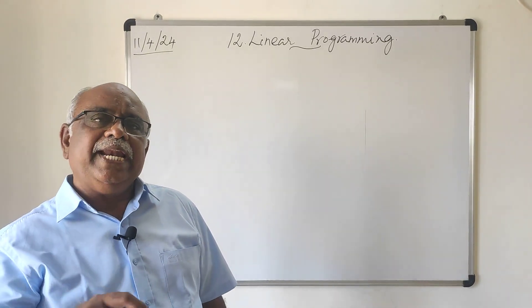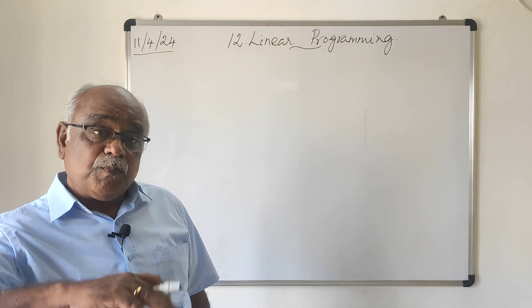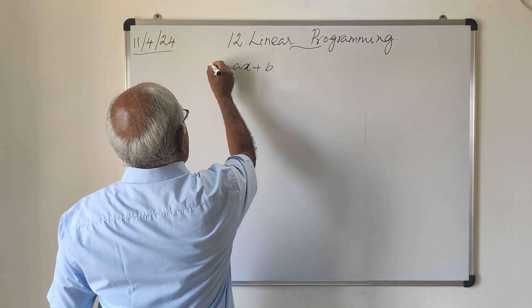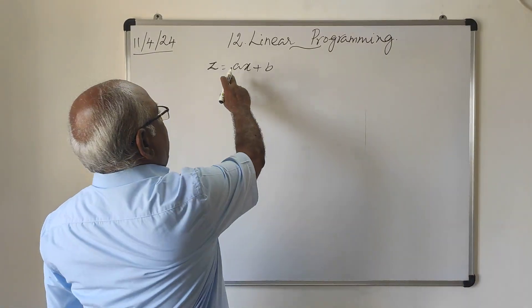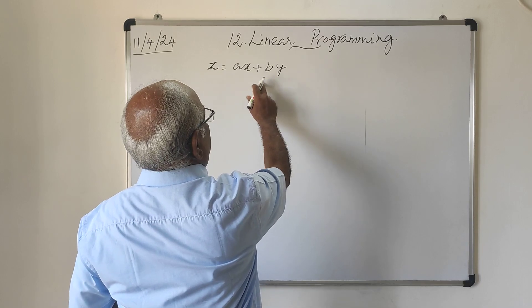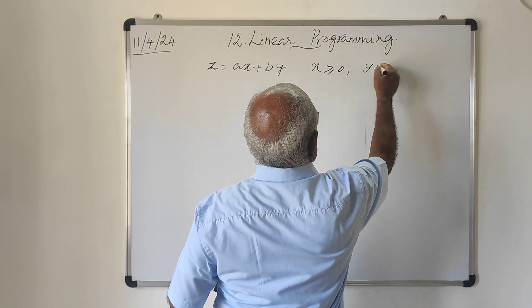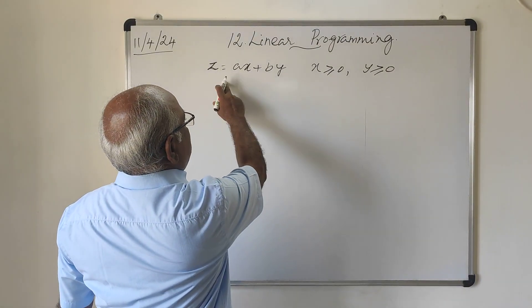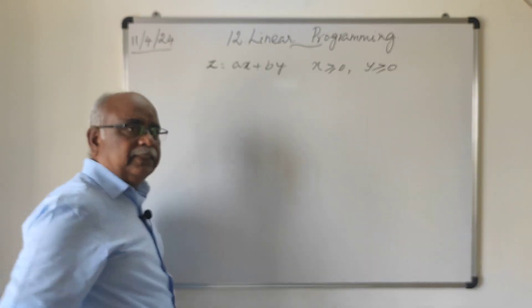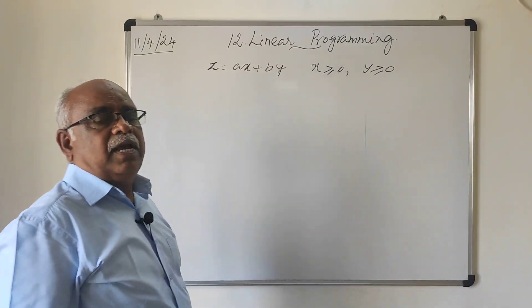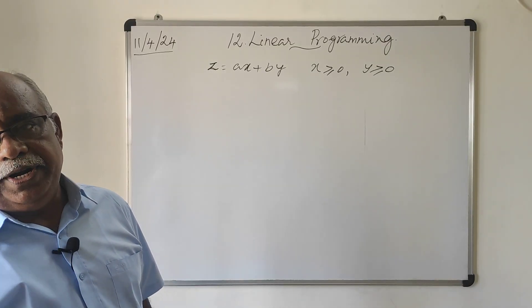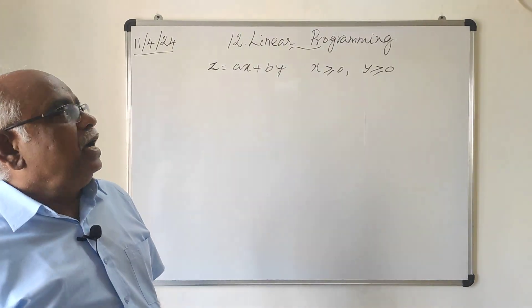The optimization problem is otherwise called a linear programming problem. A problem which seeks to maximize or minimize a linear function — linear function means z equals ax plus by. Here a and b are constants, x and y are two variables. Both x and y are non-negative variables. A problem which seeks to maximize or minimize this linear function of two variables x and y, both non-negative, under certain constraints given as a set of linear inequalities, is called an optimization problem, otherwise called a linear programming problem.